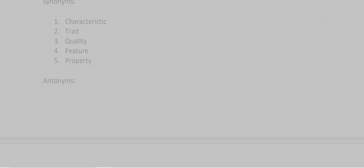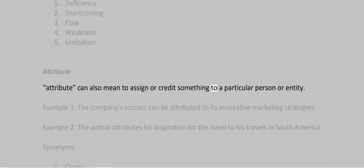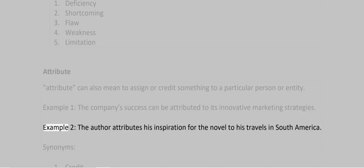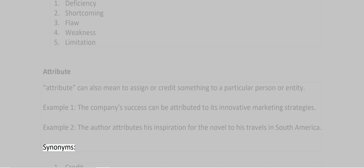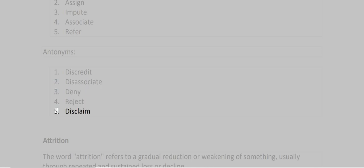Antonyms: 1. Deficiency 2. Shortcoming 3. Flaw 4. Weakness 5. Limitation. Attribute can also mean to assign or credit something to a particular person or entity. Example 1: The company's success can be attributed to its innovative marketing strategies. Example 2: The author attributes his inspiration for the novel to his travels in South America. Synonyms: 1. Credit 2. Assign 3. Impute 4. Associate 5. Refer. Antonyms: 1. Discredit 2. Disassociate 3. Deny 4. Reject 5. Disclaim.